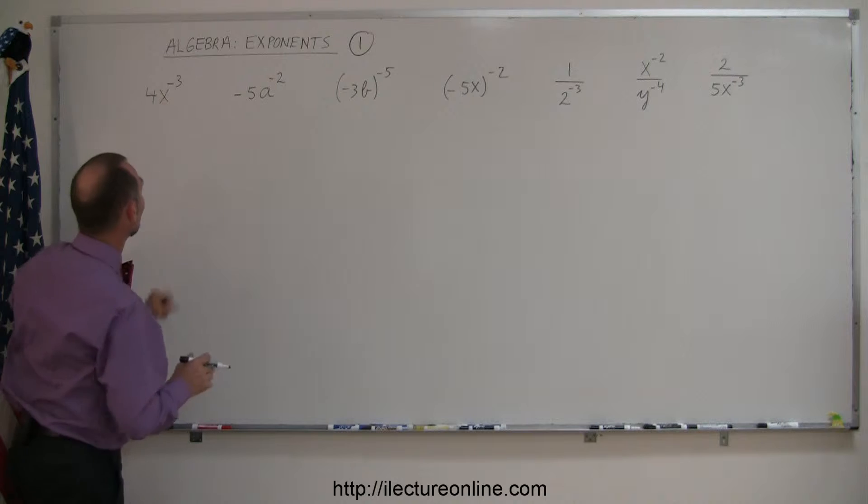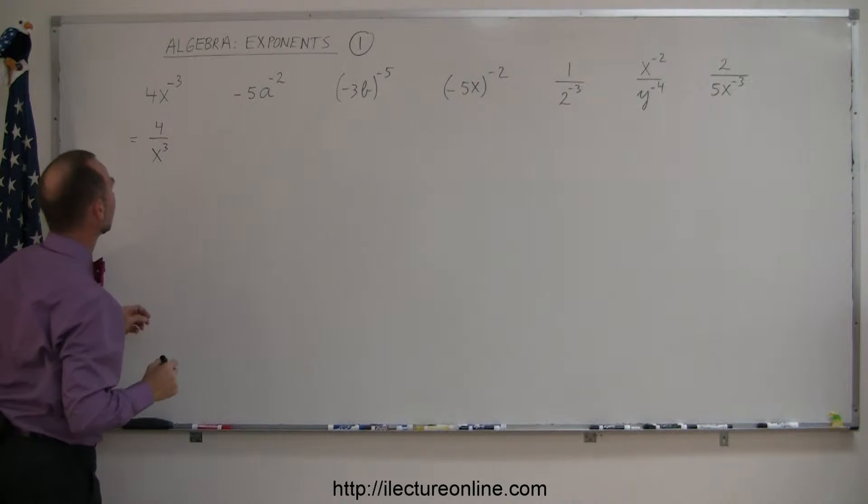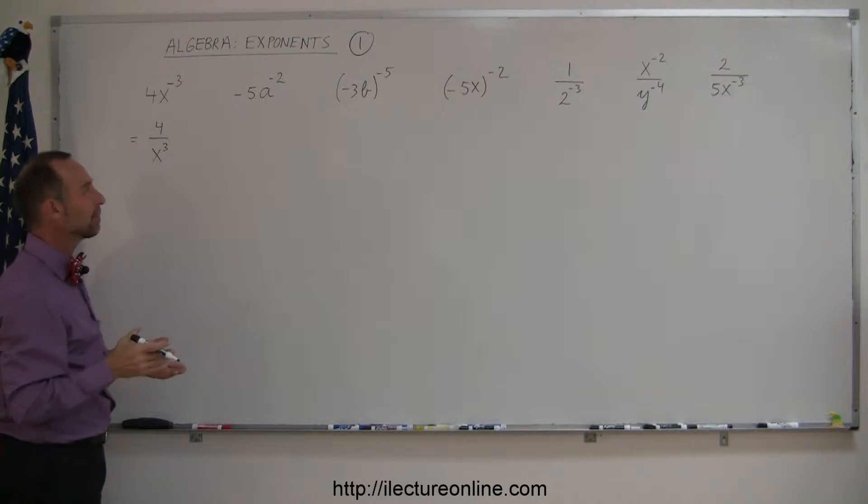So in this case, it only applies to the x, so this can now be simplified to 4 over x to the positive 3 power. And again, simplify typically means getting rid of all the negative exponents, and that's as far as we can simplify that one.